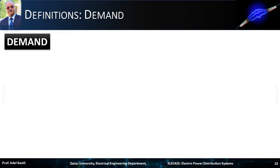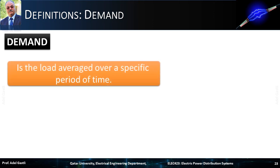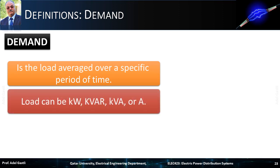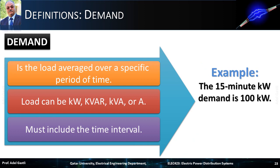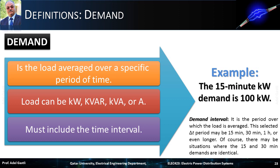Now let's look at definitions of some important parameters useful for the analysis of the distribution system. We start with demand: it is defined as the load averaged over a specific period of time, where the load can be expressed in kilowatts, kilovolt-ampere reactive, kilovolt-ampere, or amperes. Demand must also include the corresponding time interval during which the load is averaged. For example, the 15-minute kilowatt demand is 100 kilowatts. The demand interval is the period over which the load is averaged — this selected period may be 15 minutes, 30 minutes, 1 hour, or even longer.